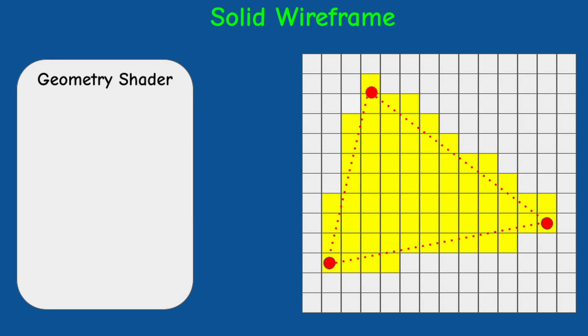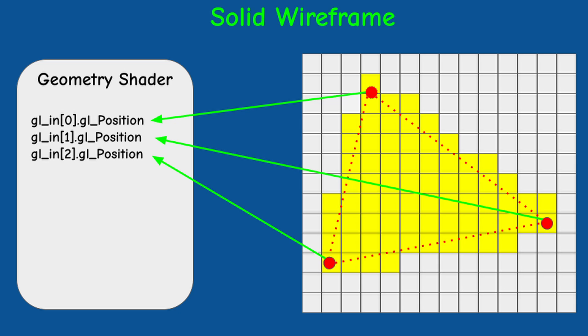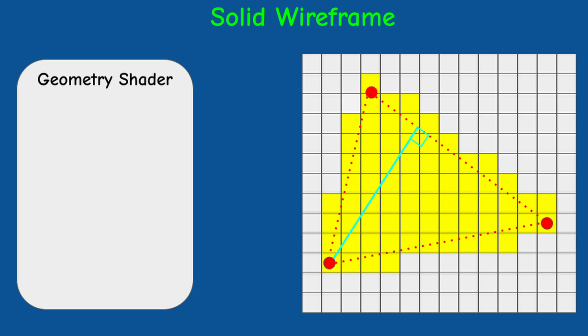The GS is very useful here because it provides us the information for the three vertices in a single shader execution. What we need to do in the GS is calculate the minimum distance from each vertex to the opposing edge. We will output the distance from the three vertices to their opposing edges and the rasterizer will interpolate them for each fragment. In the fragment shader we will find the distance to the closest edge, and if the result is smaller than a configured threshold, we will change the color of the fragment.